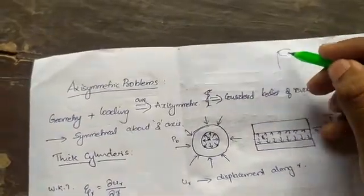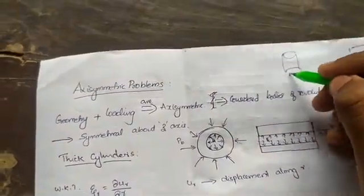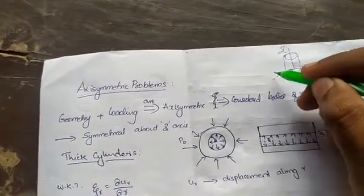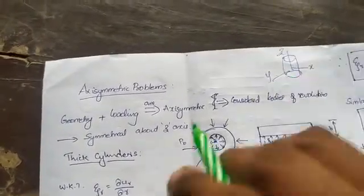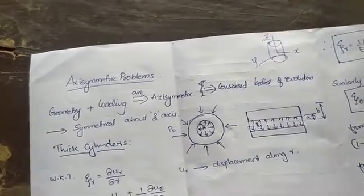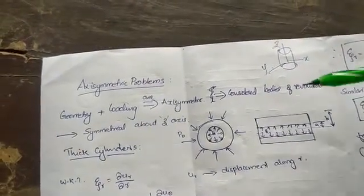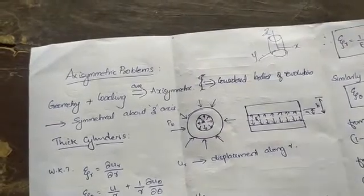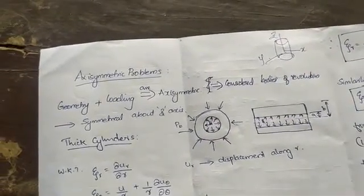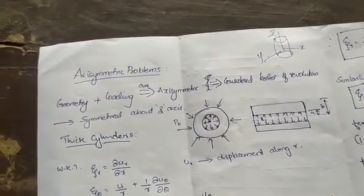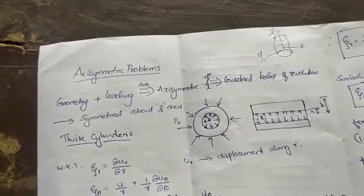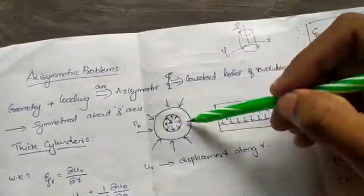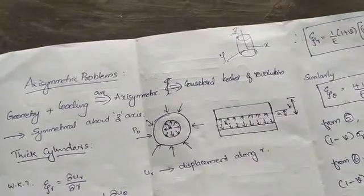Generally, we consider z as the axis, x and y as the other directions. First of all, we are going to learn about thick cylinders. We will look at the thick cylinder case and analyze what can be found from it.